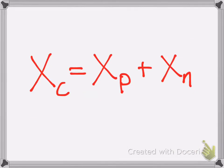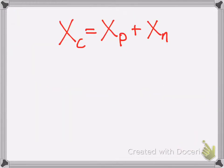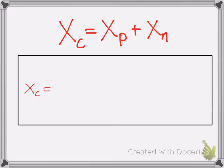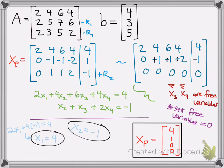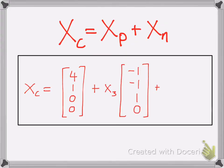We have our particular solution, what we solved for here, and our two special solutions, what we just solved for. So let's put it all together — we have our complete solution: the particular, plus our two special solutions. And there you have it. It's a long process, but it's actually quite satisfying once you get it done and figure out what you did. This was the method for finding the complete solution in linear algebra. Hope it helped. Good luck and happy studying.